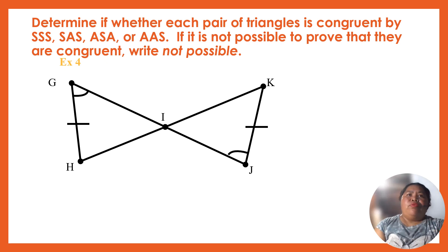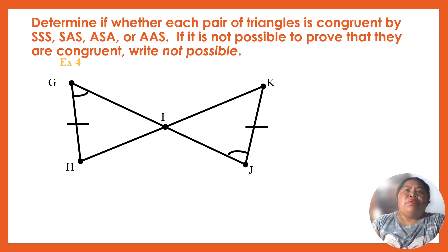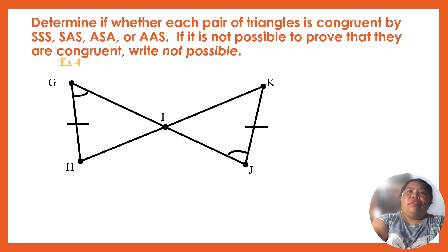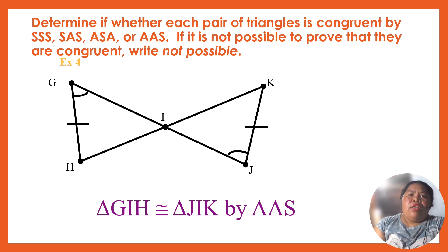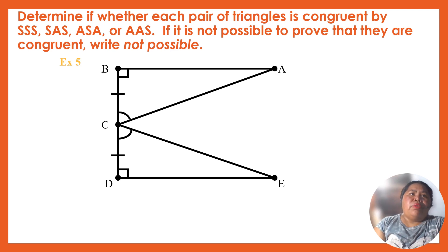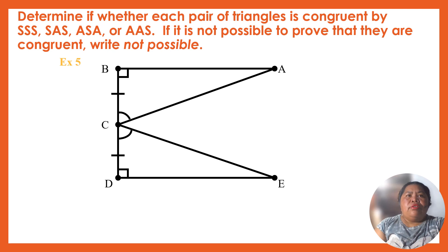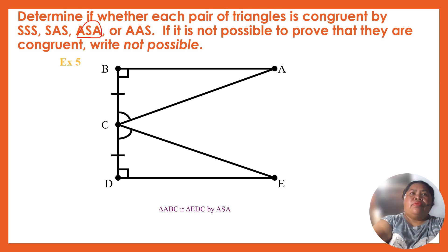Now determine whether each pair of triangles is congruent by SSS, SAS, ASA, or AAS — if not possible, state that. So we have triangle GIH congruent to triangle JIK by AAS — angle-angle-side. For example number five: determine whether each pair is congruent by SSS, ASA, or not possible. We have two angles here, so this is angle-side-angle — ASA.